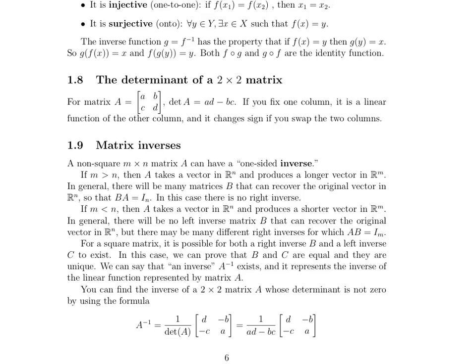The two situations are: if m is greater than n — so the number of rows is greater than the number of columns — then the matrix takes a vector in Rⁿ, which is shorter than the vector it produces, which is a longer vector in Rᵐ.